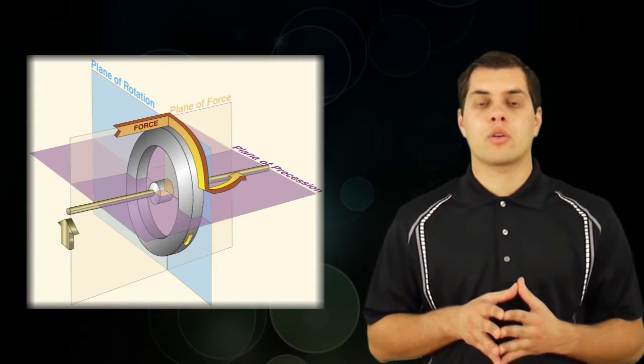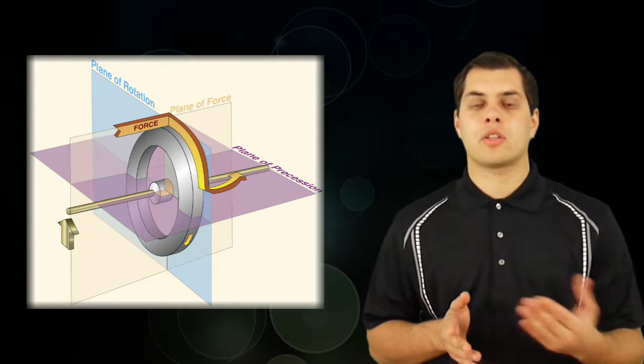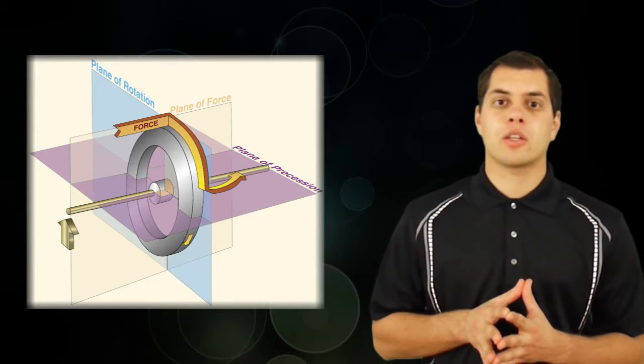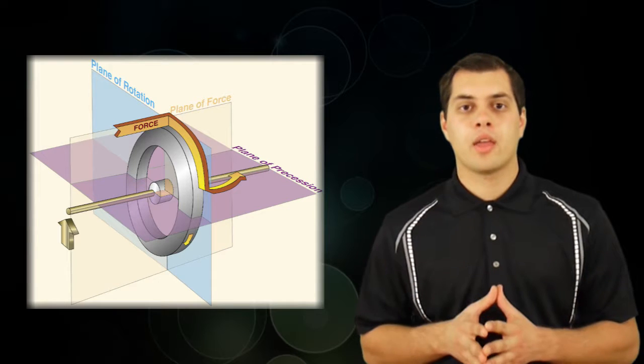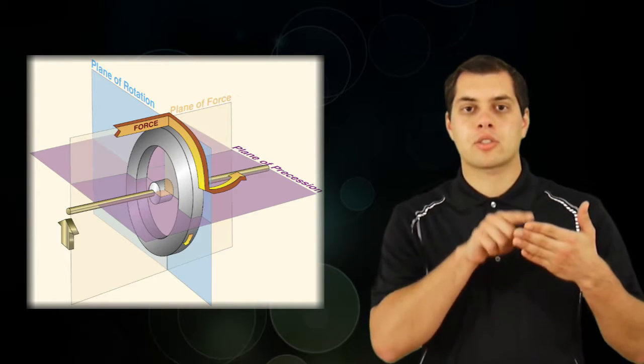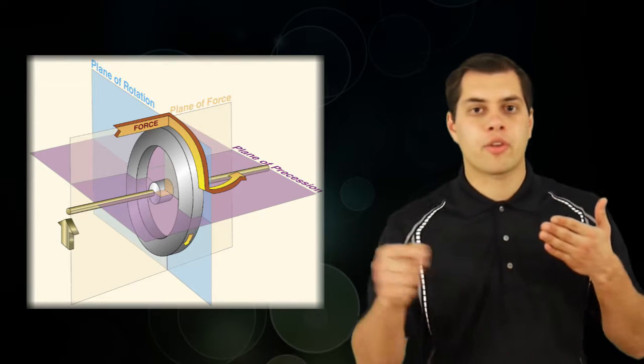Now, the other thing is precession, or when you apply a force, it gets felt 90 degrees forward of the rotation. So if you've ever ridden a bike, you know that you can just lean a little bit and the bike will turn. And the reason that happens is because you apply a force to the top of the wheel, it gets translated 90 degrees forward, and the front of the wheel turns.